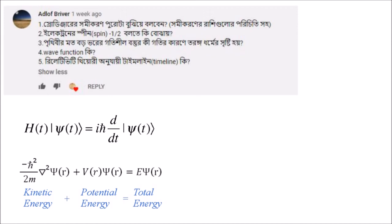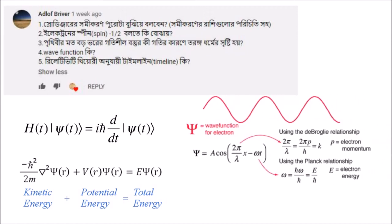If you look at T, it is space-dependent or time-dependent. This is the total equation. This is the total value of T. This is the way we write k. We write k = 2π / λ. So this is k, which is the momentum of the electron.